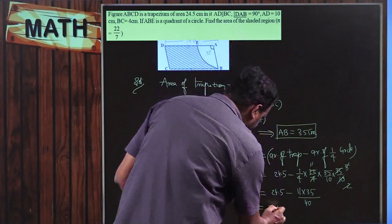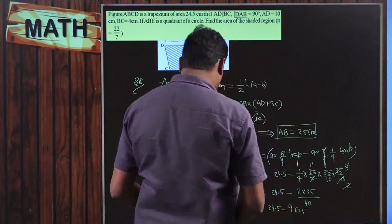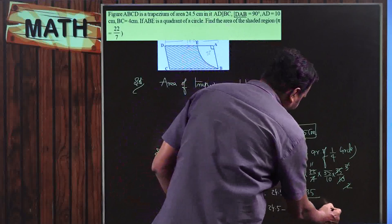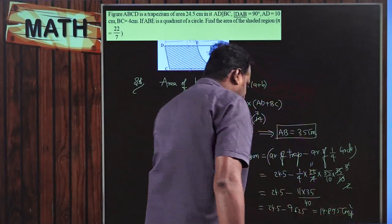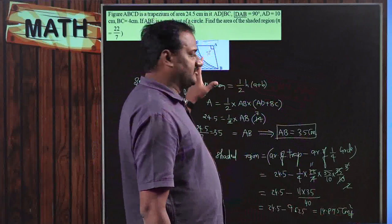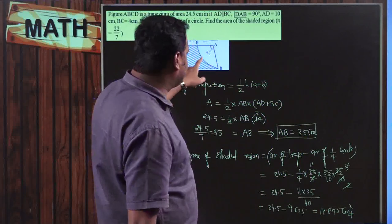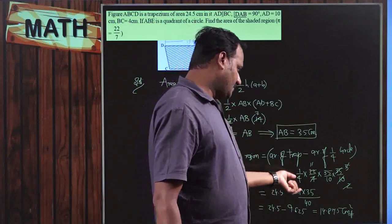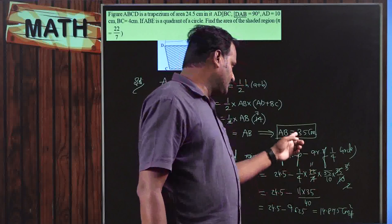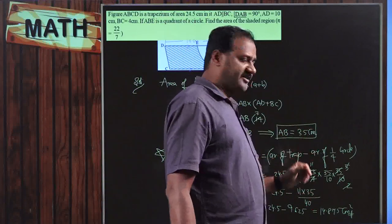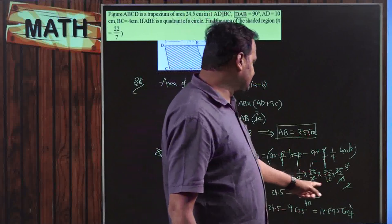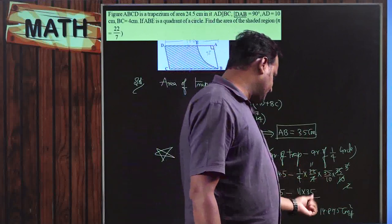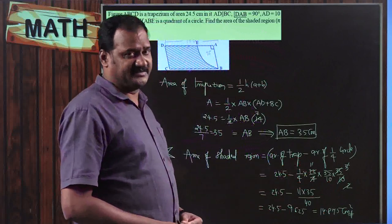So it is 24.5 − 9.625 = 14.875. Therefore 14.875 cm² is the area of the shaded region. To summarise: area of shaded region = area of entire trapezium (24.5) minus (1/4) π r², where π = 22/7 and r = 3.5 cm = 35/10. After cancellations, we get 11 × 35 in the numerator and 40 in the denominator, giving a final answer of 14.875 cm².